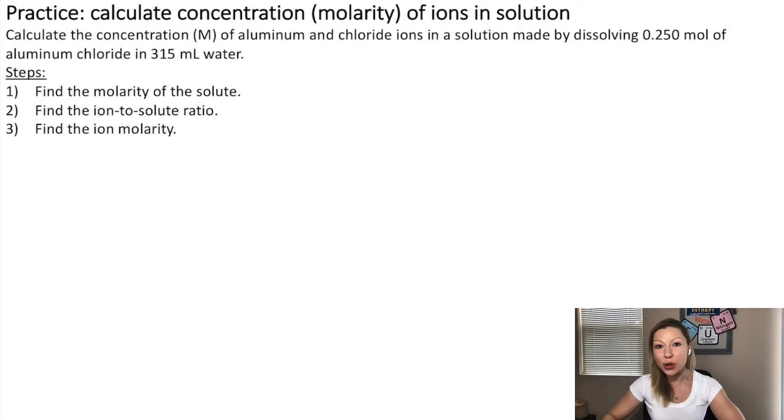Hello, guys. In this video, we are going to review how to calculate the molarity of ions in a solution. In this question, we need to calculate the molarity of aluminum and chloride ions in a solution prepared by dissolving 0.250 mol of aluminum chloride in 315 milliliters of water.